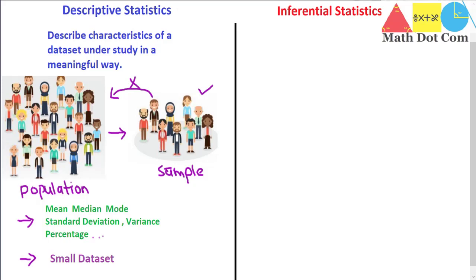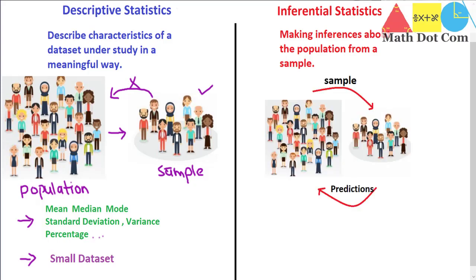In case of inferential statistics, we have requirements for making the analysis. Inferential statistics is all about making inferences or predictions about the population from a sample. Here comes the difference between descriptive and inferential statistics. In case of inferential statistics, we have to make the inferences or predictions about the population from the sample.